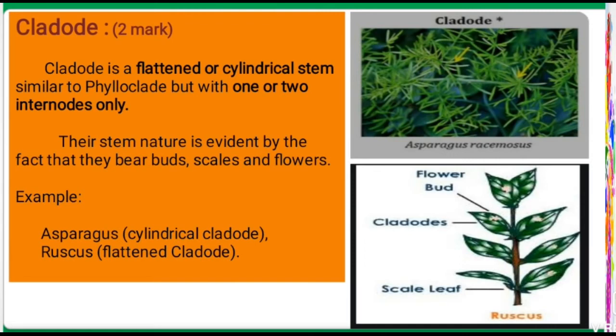The stem nature of cladode is confirmed by the fact that buds, scales, and scaly leaves are present. In the stem region, we can identify these features. Good examples of cladode are Asparagus and Ruscus. Asparagus is cylindrical in shape and is one kind of cladode.